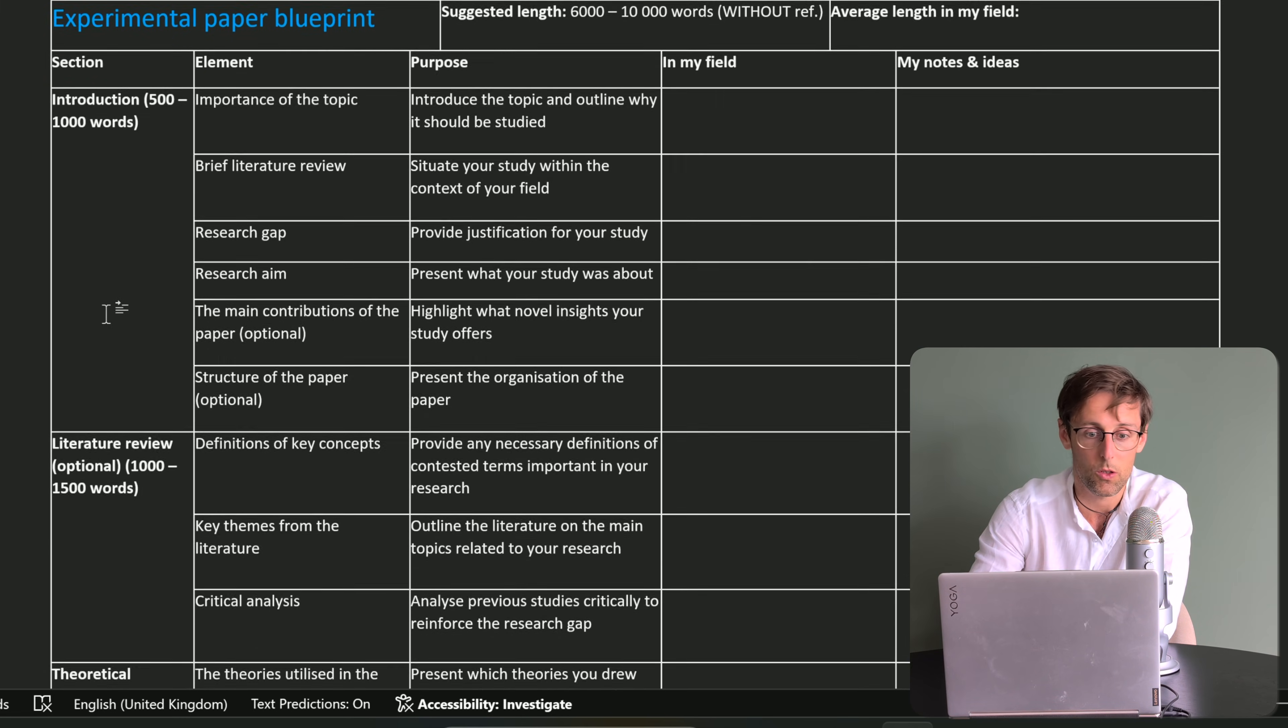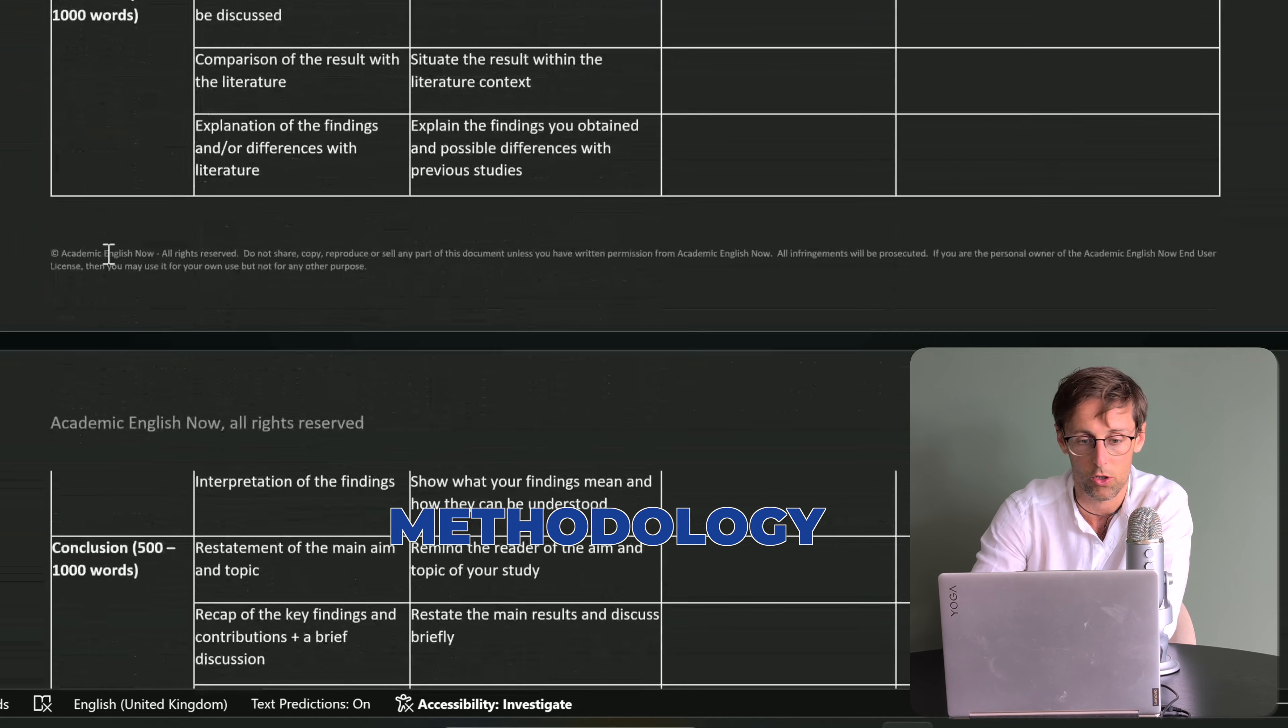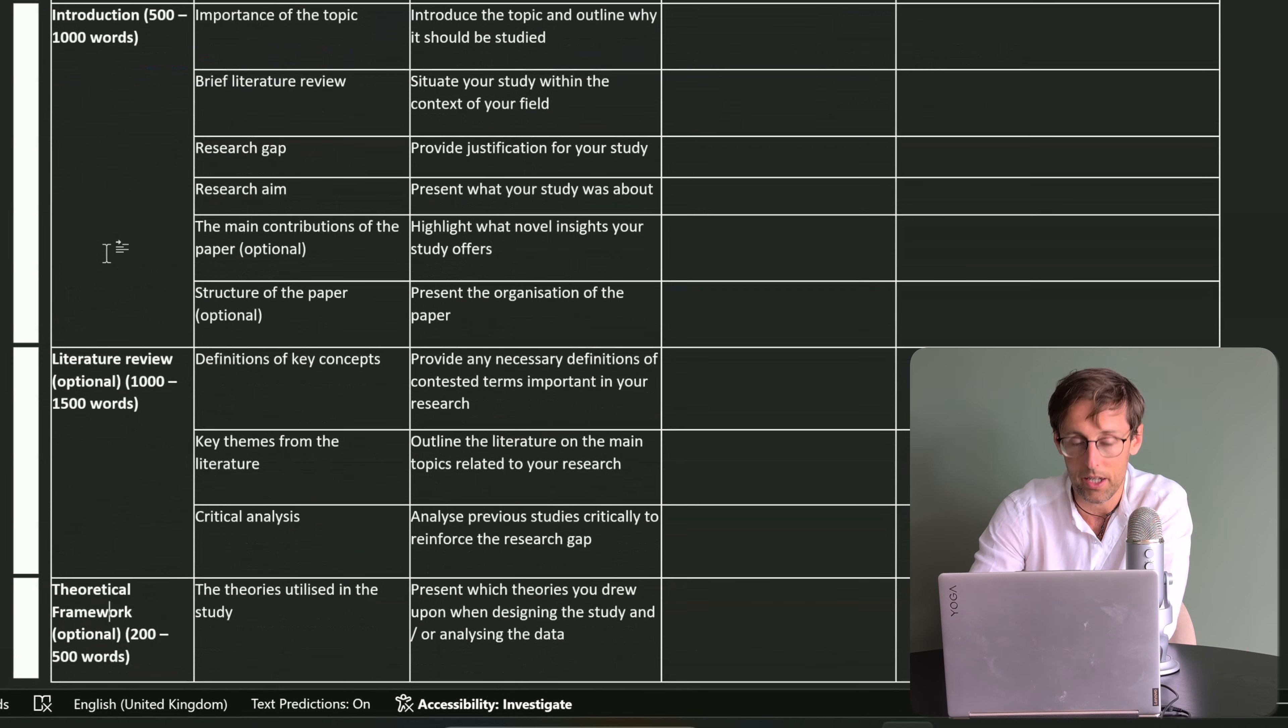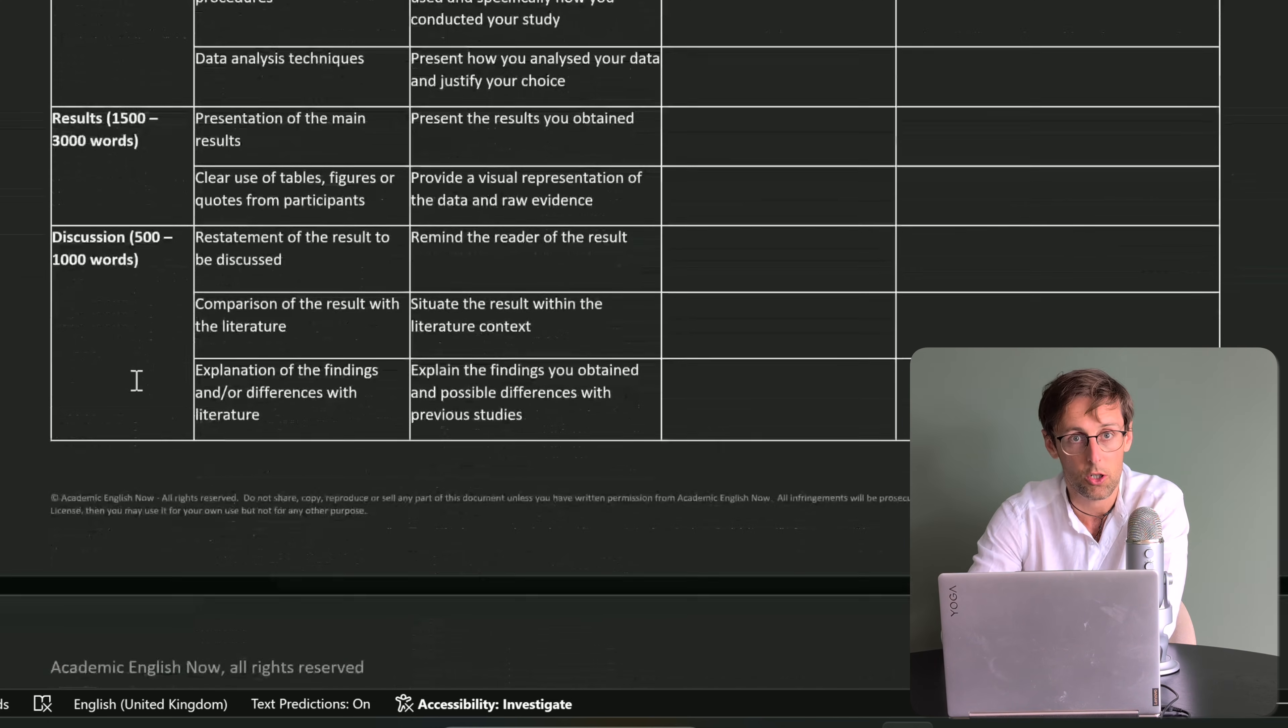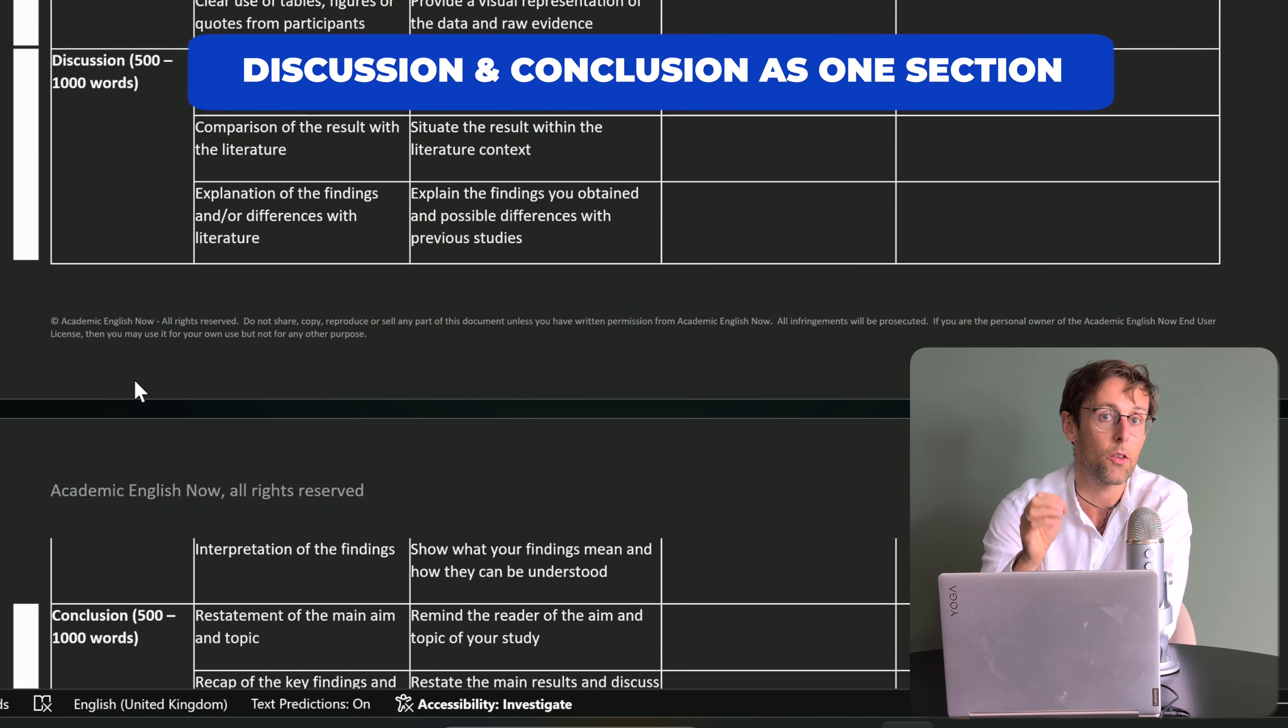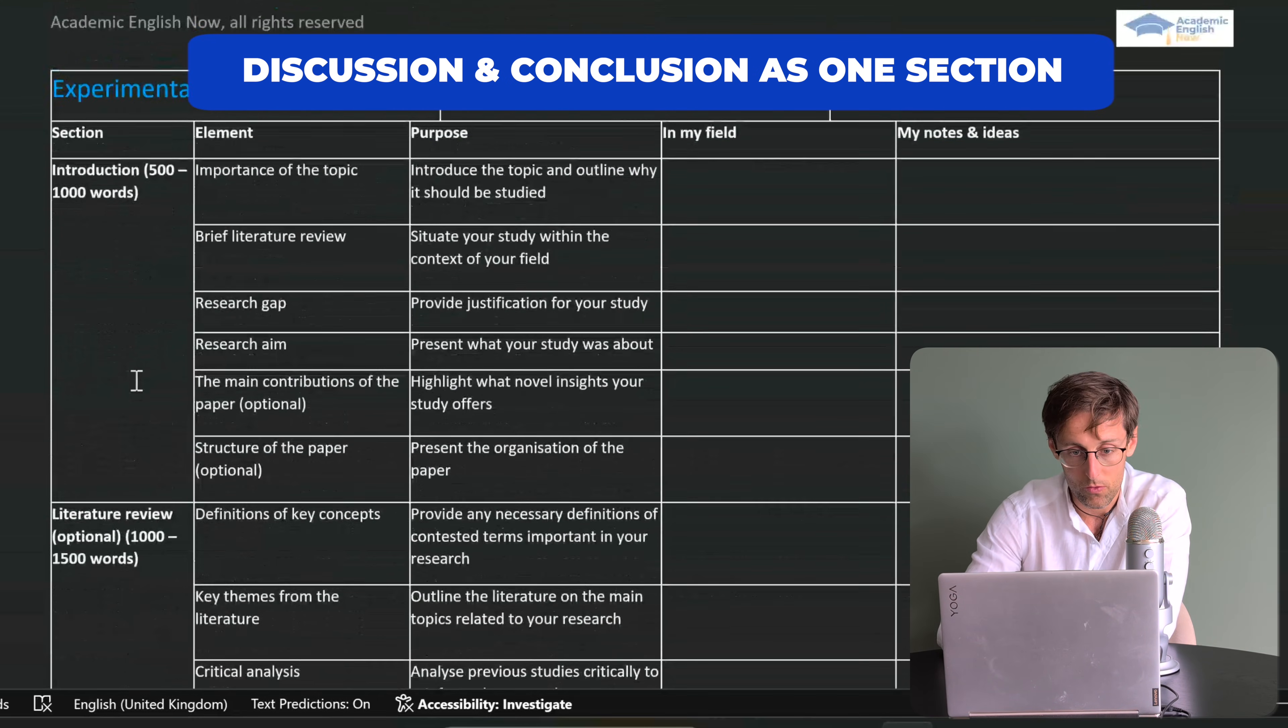Once you've done that, look at those five papers and then look at the big sections in this blueprint: introduction, literature review, theoretical framework, methodology, results, discussion, and conclusion. See if all these sections appear on average in your papers and if they appear in the same order and have the same length. What often happens in certain disciplines is that there is no separate literature review section but it's included in the introduction. In other disciplines such as medicine, it's very common to have discussion and conclusion as one section. Pause the video and make these adjustments to the blueprint.